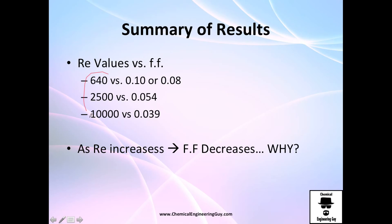So, recall the Reynolds numbers are right here. And recall the friction factors. I prefer using this one right here. So, as you can see, as the Reynolds number increases, in general, the friction factor decreases. You can see 640 has 0.08, 2,500 has 0.054.